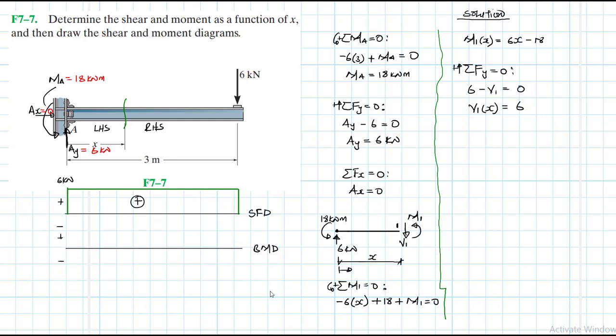So when x is equal to 0 we expect a negative moment, which just makes sense. If you took a section there, just before, you'll have a clockwise moment, which just matches with our equation. So when x is equal to 0 we expect a negative value of 18. This is our 18 kilonewtons meter. And then when x is equal to 3, that becomes 6 by 3, 18, 18 minus 18 is 0.